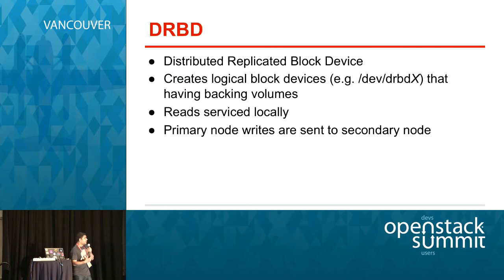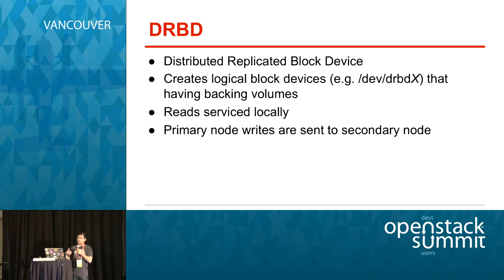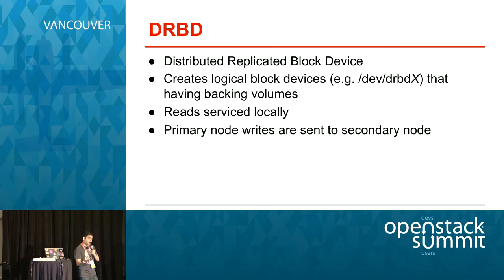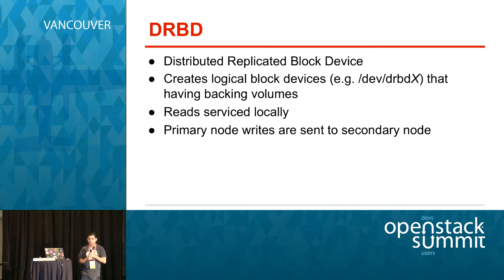For the database side, DRBD — Distributed Replicated Block Device — uses underlying block storage devices to create a logical block device on top, like /dev/drbdX. The backing volumes handle the I/O. Whenever a write I/O occurs, it's sent simultaneously to a secondary node and committed to the backing volumes of the DRBD volume on the secondary node. When a read occurs, it's serviced locally. Using this approach, you can anticipate a delay on write I/O because you have to wait for the other side, whereas reads are serviced locally and generally fine from a performance perspective.